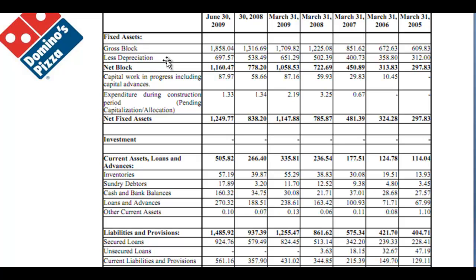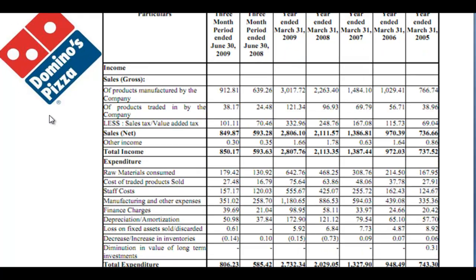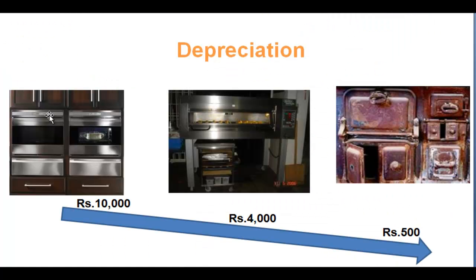Depreciation is how capital expenditure is expensed. For example, let's say this is a new oven that Domino's bought this year. After one or two years of using the oven, this is how the oven looks — like a used oven compared to a fresh, unused one.